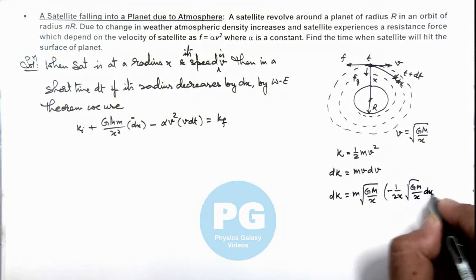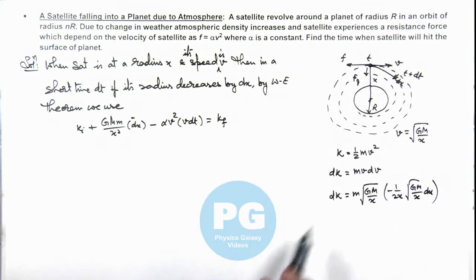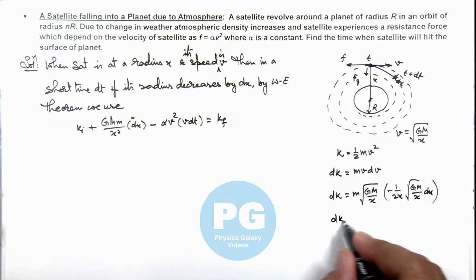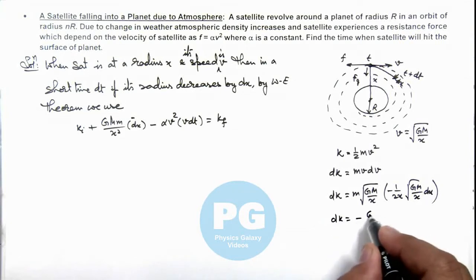So in this situation the value of dk we are getting is -GMm/(2x²) dx.